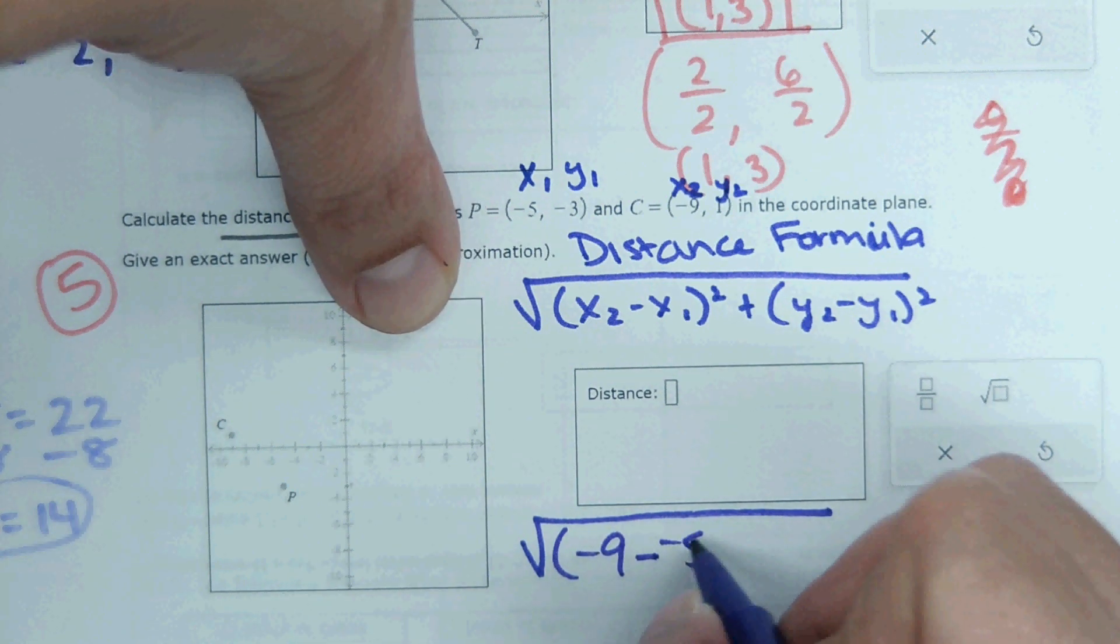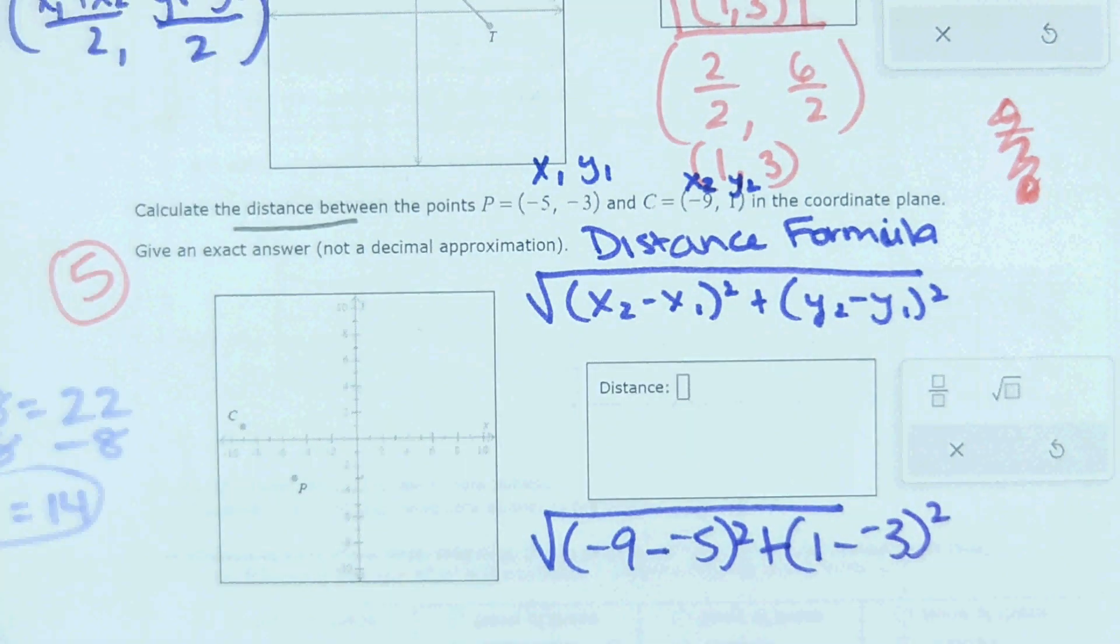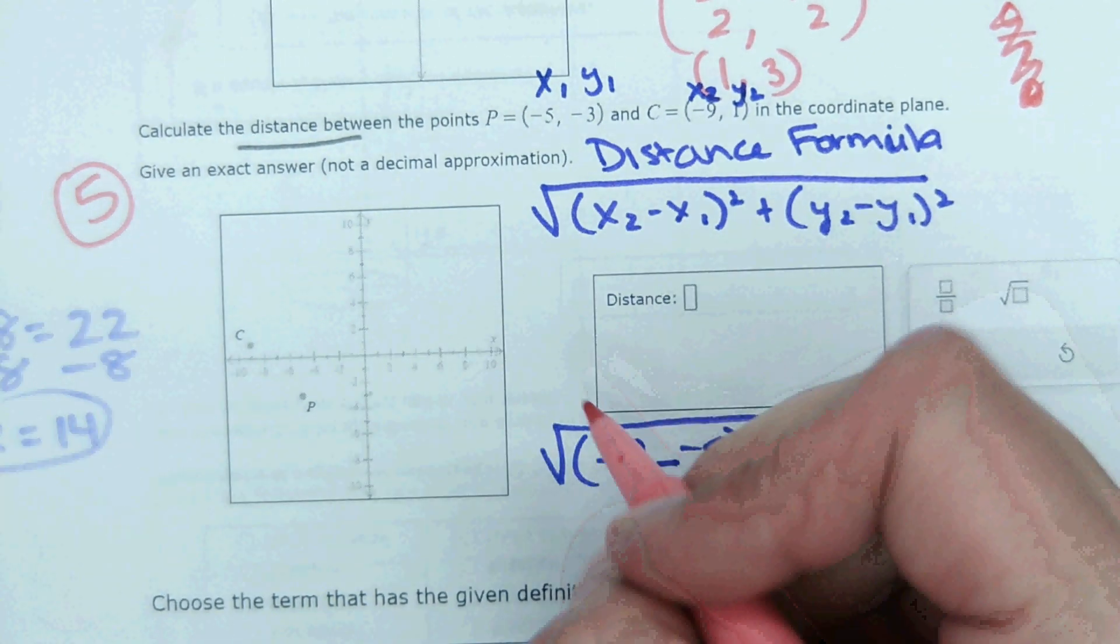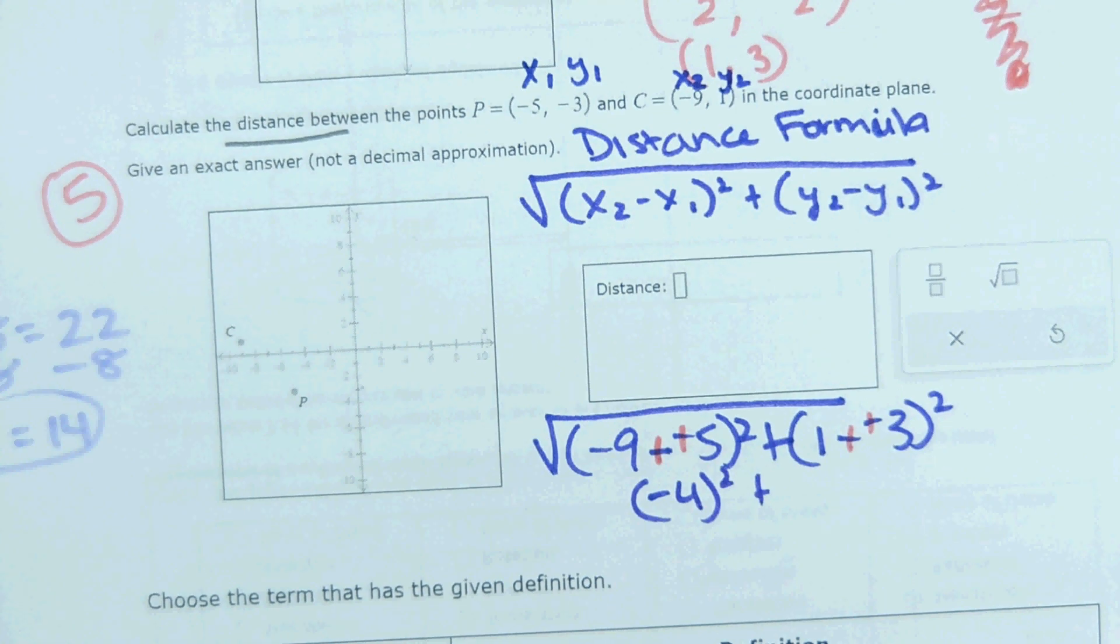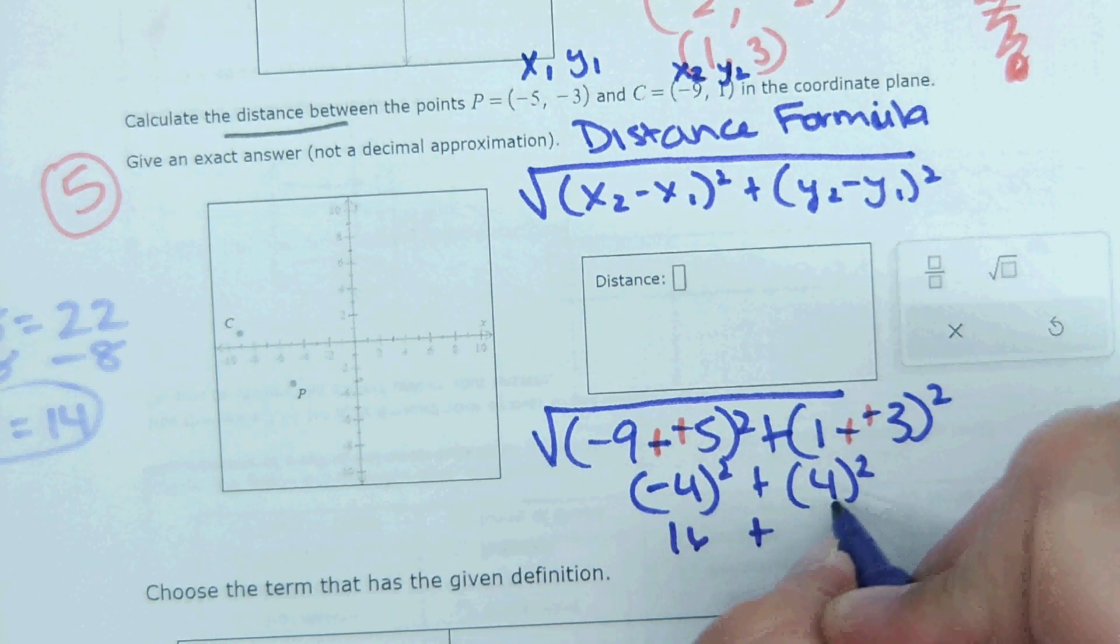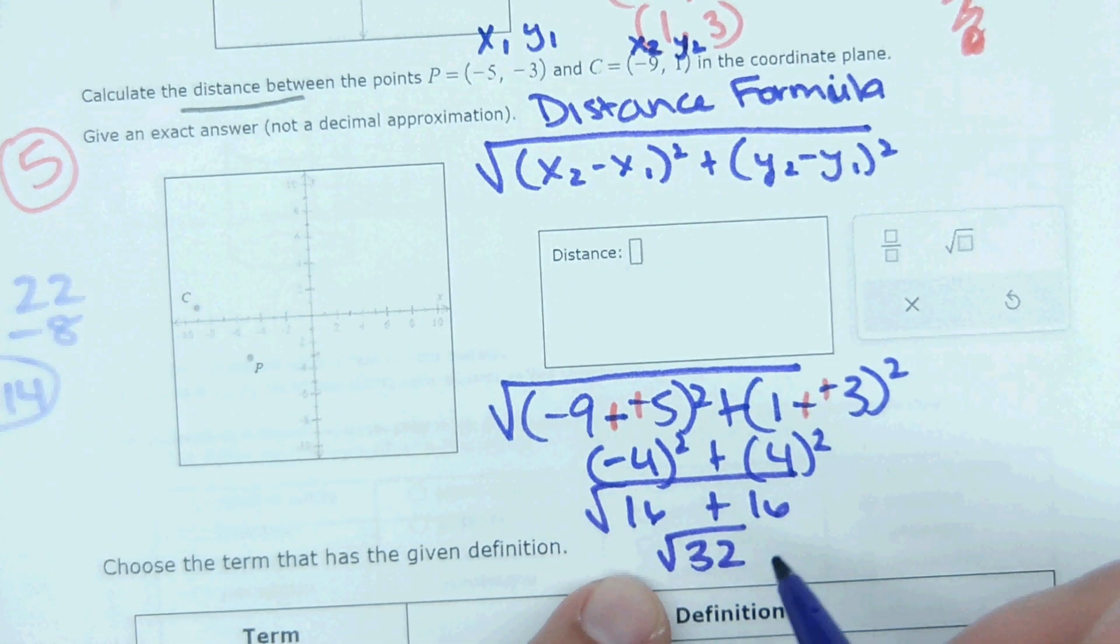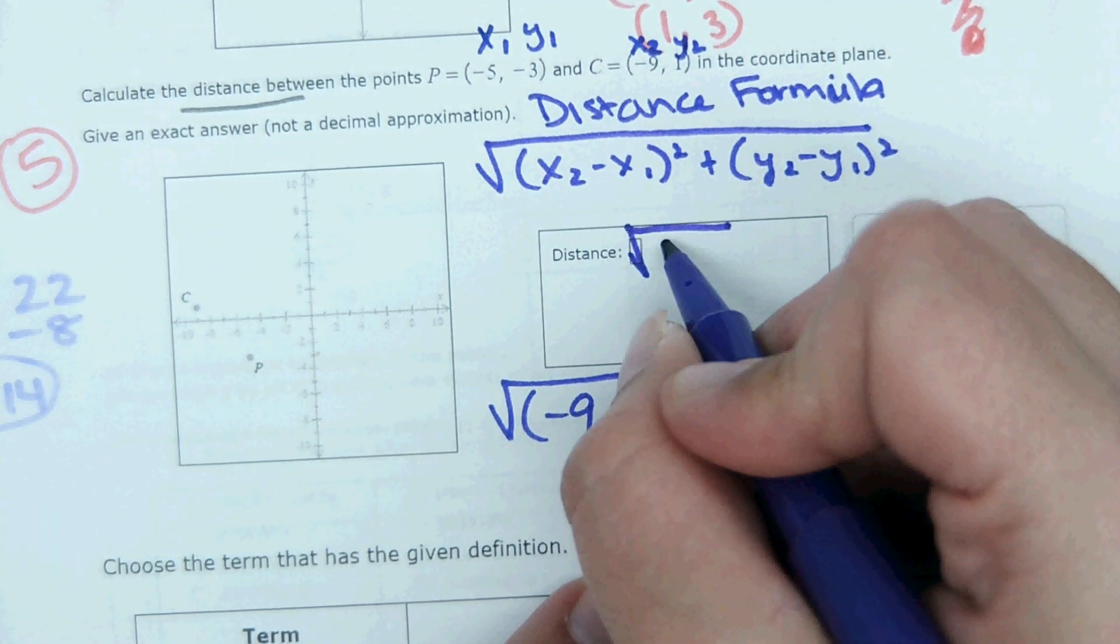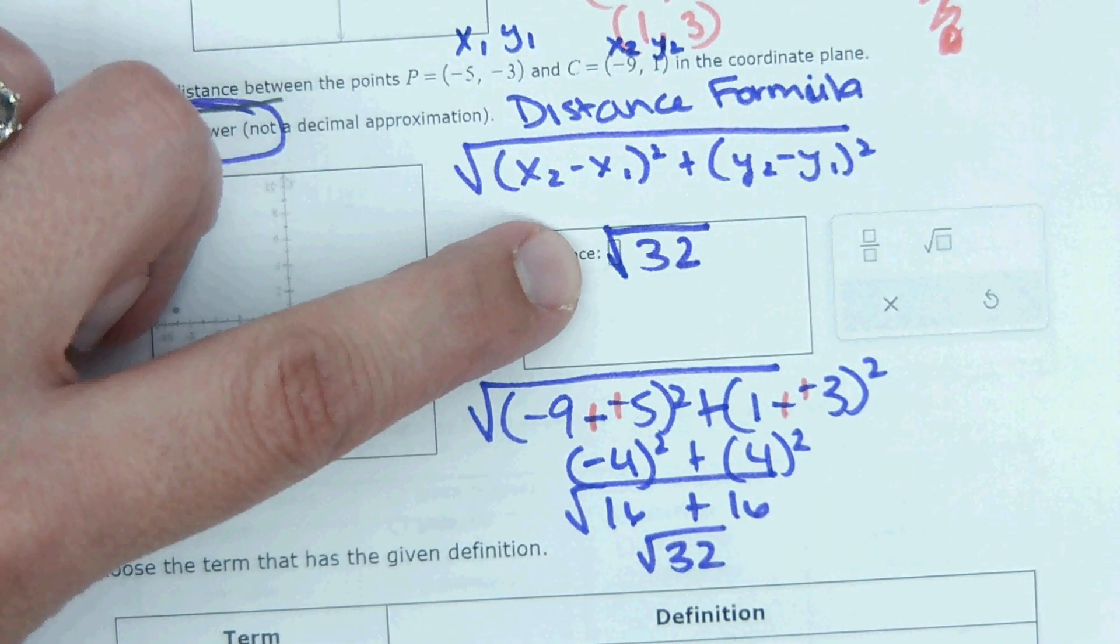Negative 4 times negative 4 is going to be positive 16. 16, 16, square root of 32. Now, if this came out to a perfect whole number, I would solve it like that. But in this case, square root of 32 is going to come out to a decimal or something. And this says to give an exact answer, not a decimal approximation. So, you can just put this in the box and it will accept it as correct.